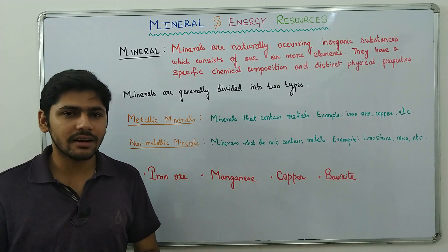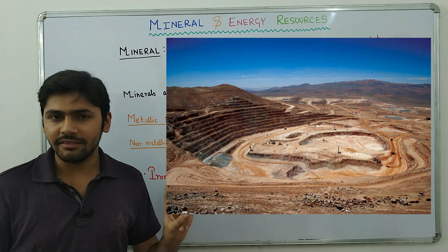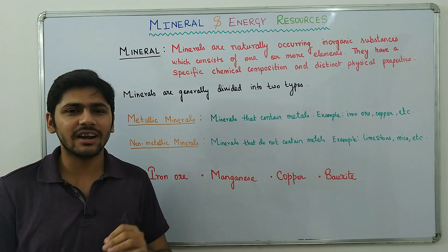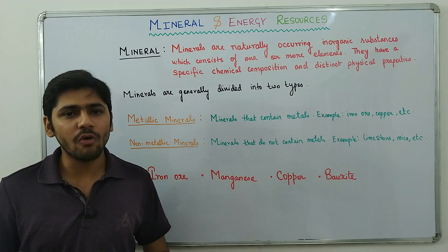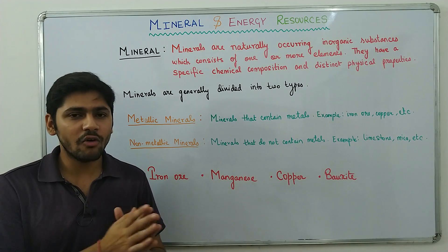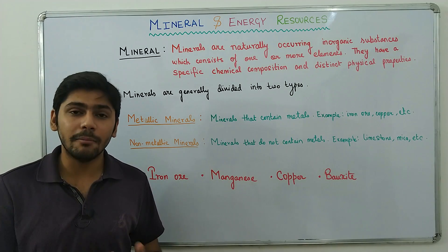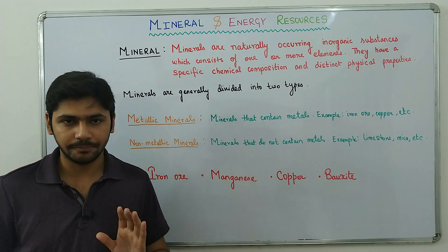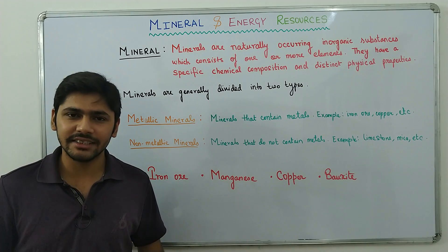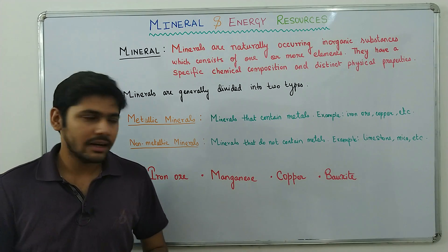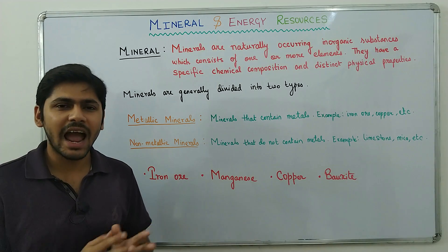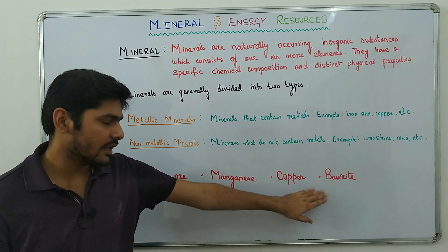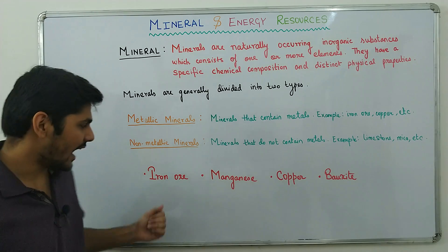We extract minerals from the earth through mining and excavation. We extract mineral ores from the earth's crust and then purify those ores to get the purified mineral. In this chapter we will study four minerals separately: iron ore, manganese, copper, and bauxite. We will begin with iron ore.